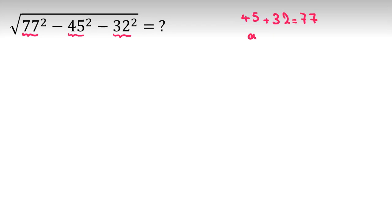So if I call this one A, this one B, 77 will be A plus B. So I want to know A plus B squared is what? We have a famous identity of A plus B squared equal to A squared plus B squared plus 2AB.